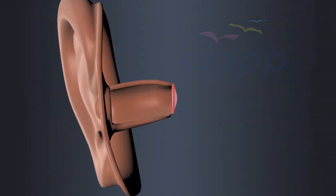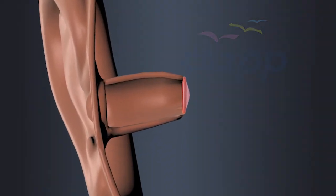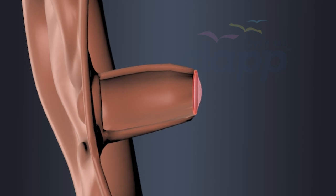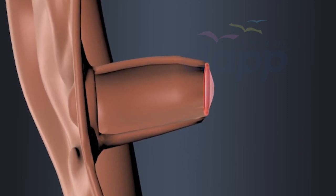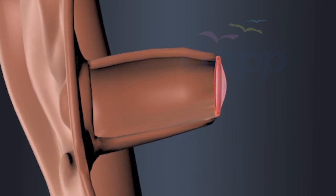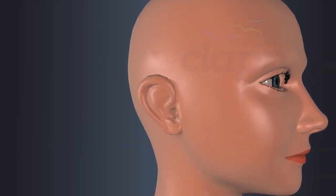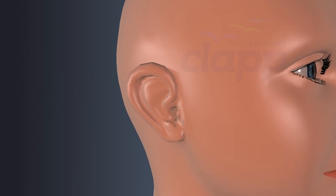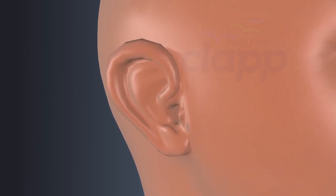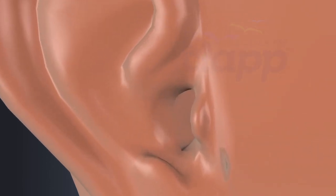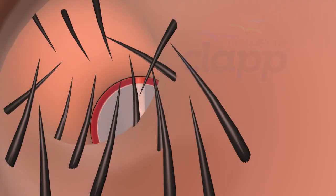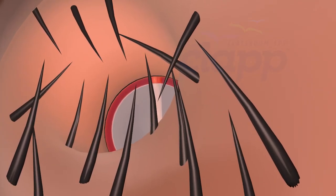Auditory canal is also known as ear canal. It is a tube-like structure that extends from the opening of the pinna to the eardrum. The auditory canal is approximately 2.5 to 3 cm long and about 0.7 cm in diameter.